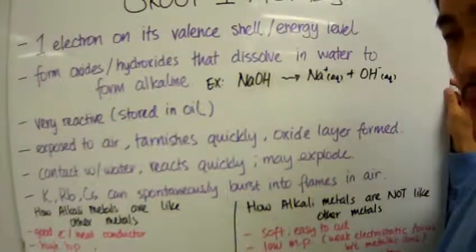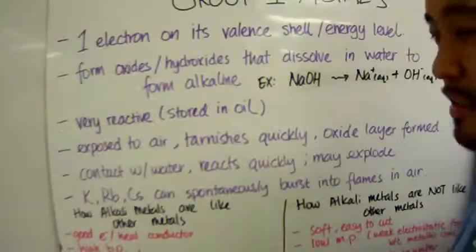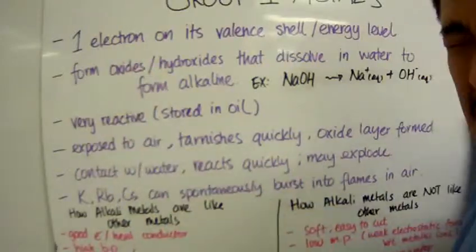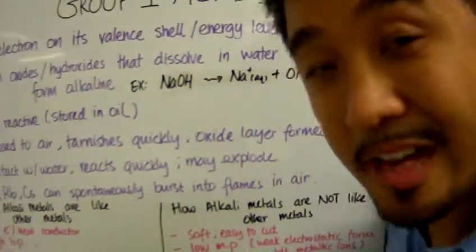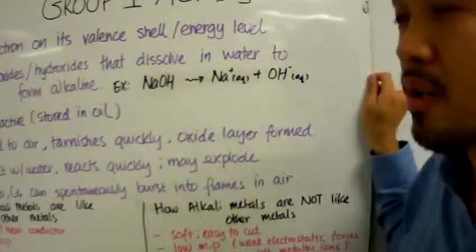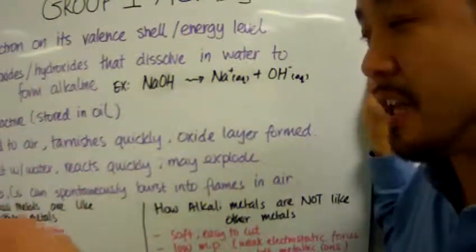Which group 1 elements are very reactive? It starts from potassium downwards. Potassium, rubidium, and cesium can spontaneously react and burst into flames in air. What about francium? Well, that's radioactive, so we don't count that.